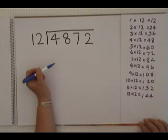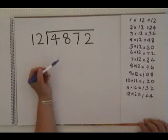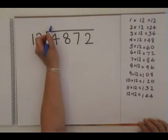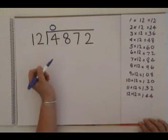To start the sum we would say 12 fits into 4 how many times? 4 is smaller than 12 so the answer is 0.